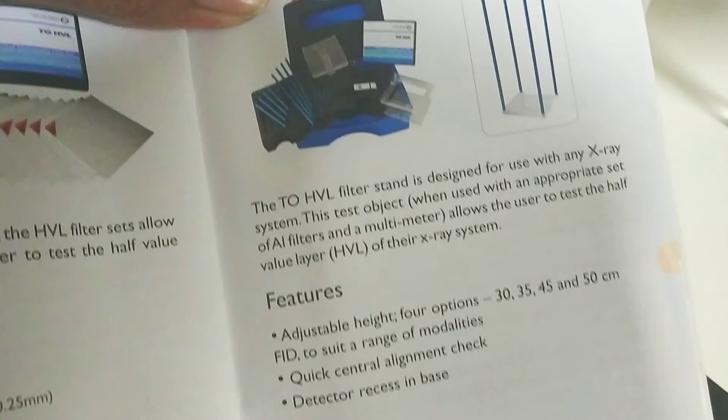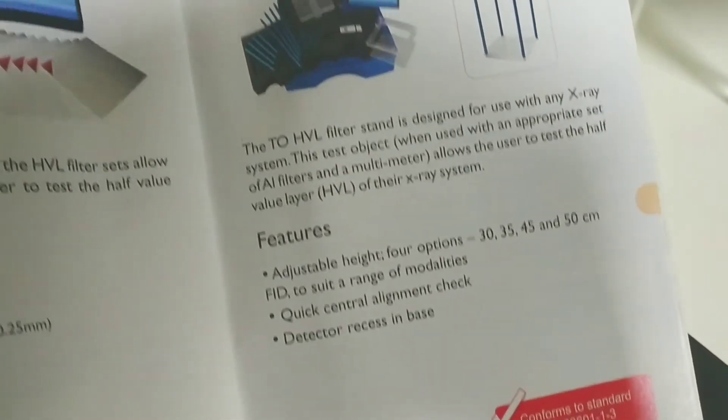allows the user to test the half value layer, HVL, of their X-ray system. The spot which we are getting in the center shows concentric circles. These concentric circles are because of that HVL filtration.